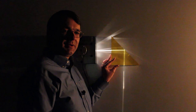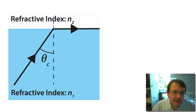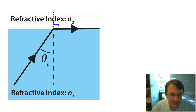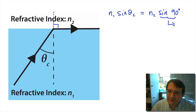Total internal reflection happens when the angle of incidence is above a certain critical angle. To calculate that angle, we consider the limiting case: the ray is incident at the critical angle and the angle of refraction on the other side of the boundary is exactly 90 degrees. If we increase the angle of incidence any further, the ray cannot refract — it would be coming back into the original medium. Using the law of refraction: n1 times the sine of the critical angle equals n2 times the sine of 90 degrees, and since the sine of 90 degrees equals one...